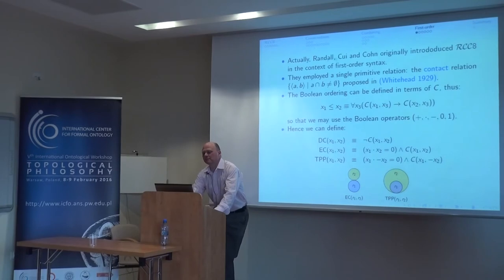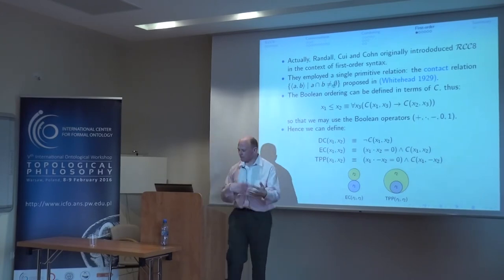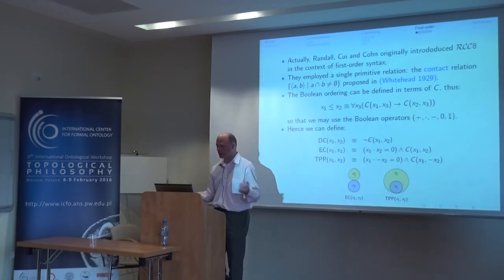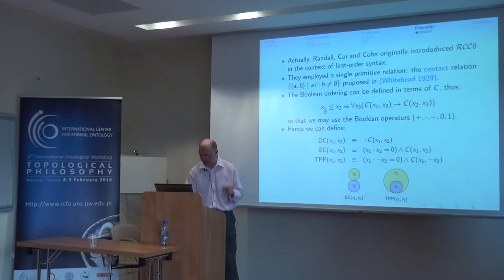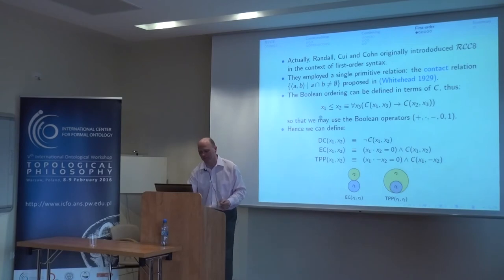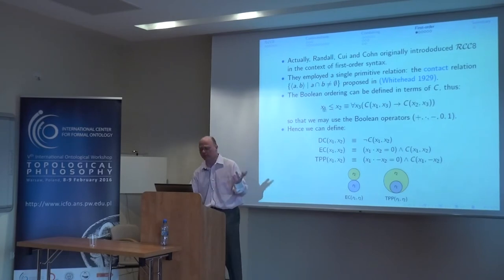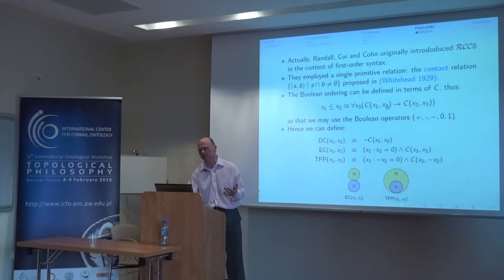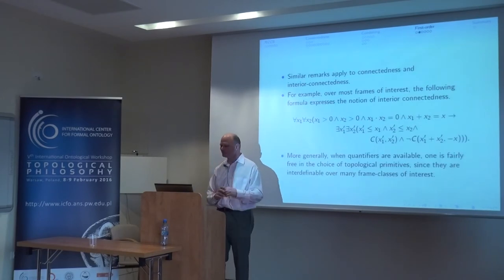If you go back to what Randall, Tzu, and Cohn did in 1992, they actually defined their logic RCC8 in terms of this Whitehead relation C, and they did everything in terms of first-order logic. They thought of this thing being embedded within a larger theory of first-order logic, the idea being that you were going to reason in first-order terms with your variables ranging over subsets of some interesting space like Euclidean space. When you do this, you can define lots of interesting things just in terms of C.